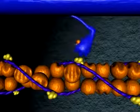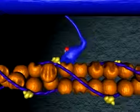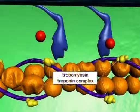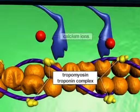At rest, most cross bridges are in the caulked configuration, prepared to interact with actin when the tropomyosin-troponin complex is moved away from myosin binding sites on actin by calcium ions.